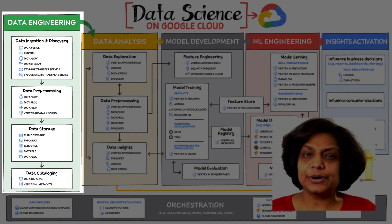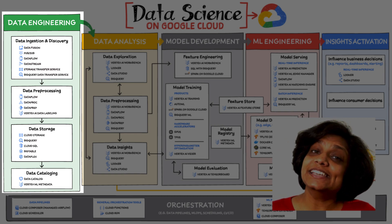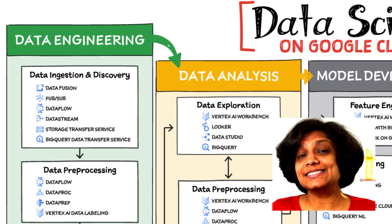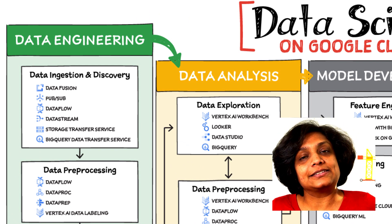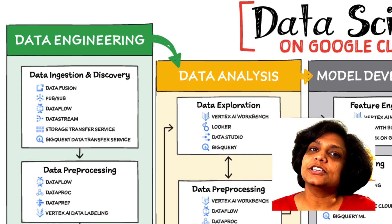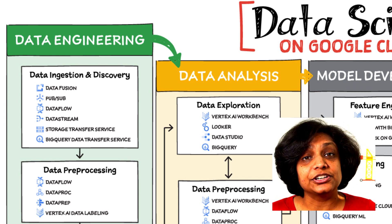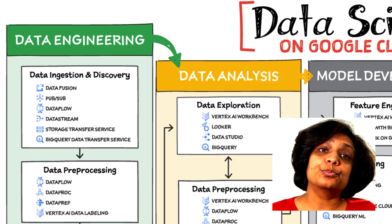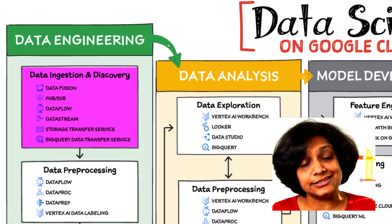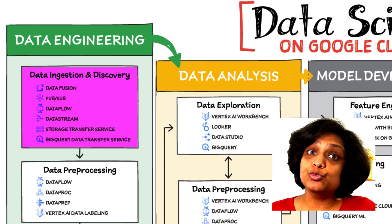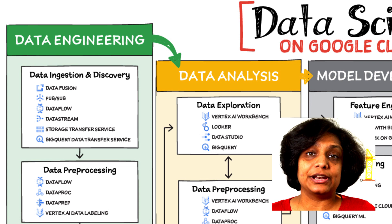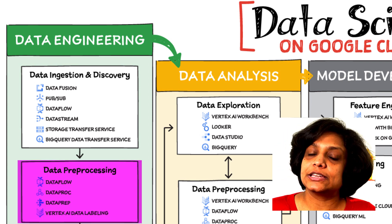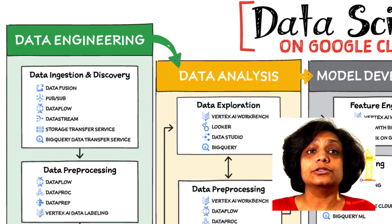First is data engineering. Perhaps the greatest missed opportunity in data science stems from data that exists somewhere but hasn't been made accessible for use in further analysis. Laying the critical foundation for downstream systems, data engineering involves the transporting, shaping, and enriching of data for purposes of making it available and accessible. We consider data ingestion as moving data from one place to another, and data preparation as the process of transformation, augmentation, or enrichment of data prior to consumption.